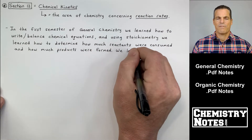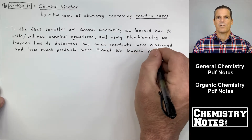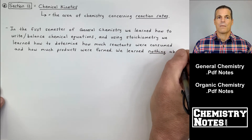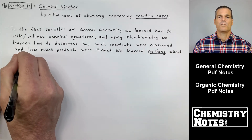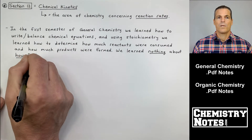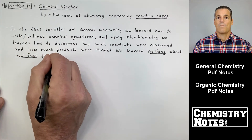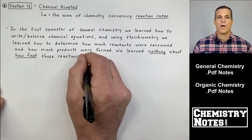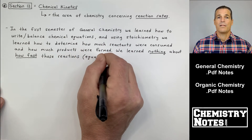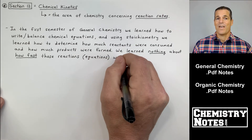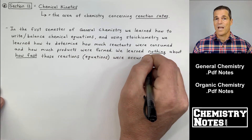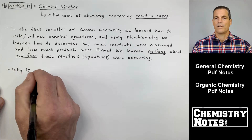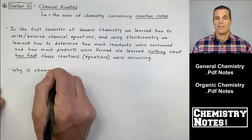In the first semester of general chemistry we learned how to write and balance chemical equations, and using stoichiometry we learned how to determine how much reactant was consumed and how much product was formed. But we learned nothing about how fast those chemical reactions were occurring.